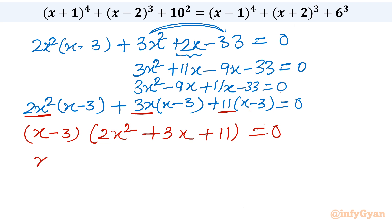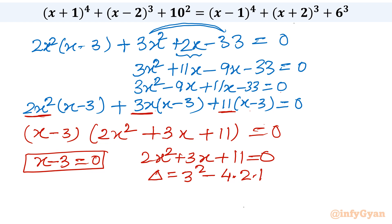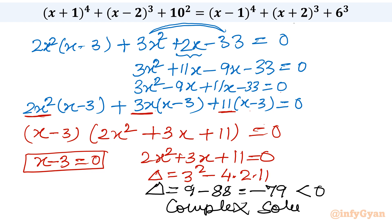Factorization is done. So either (x-3)=0, giving x=3, or 2x²+3x+11=0. Checking the discriminant of the quadratic: Δ = 3²-4(2)(11) = 9-88 = -79. Since the discriminant is negative, this gives complex solutions only, which we won't consider.